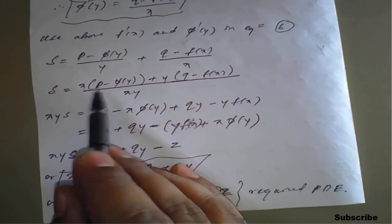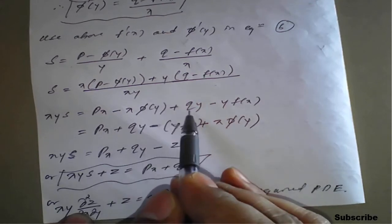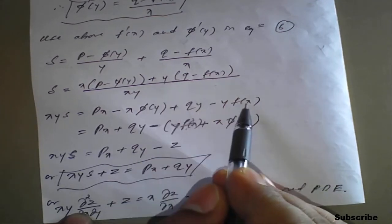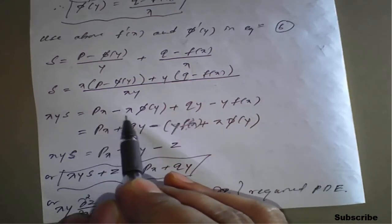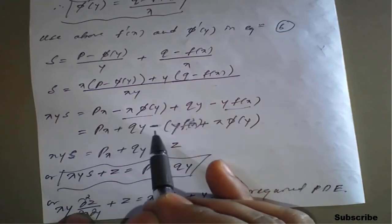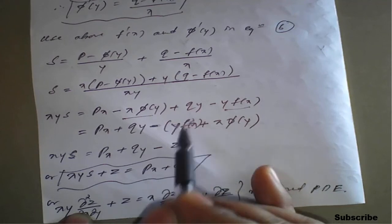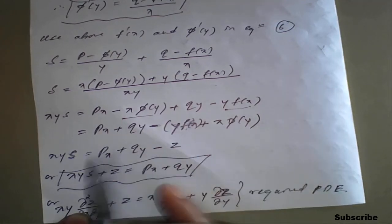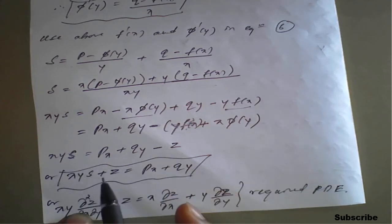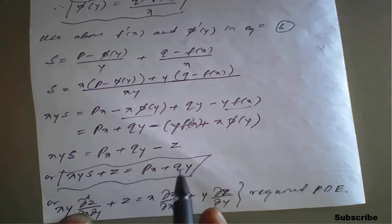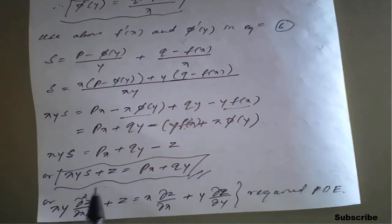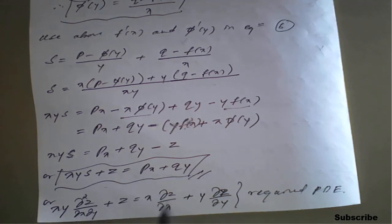Opening the bracket, xy·s equals xp minus x·phi of y plus yq minus y·f of x. Keeping xp plus yq on one side and taking a minus sign common from the remaining terms, we get minus the quantity y·f of x plus x·phi of y, which is nothing but minus z, the original equation. Shifting z to the left-hand side, the result is xy·s plus z equals xp plus yq. In full notation, this is xy times dou square z upon dou x dou y, plus z, equals x times dou z by dou x plus y times dou z by dou y. This is the required PDE.